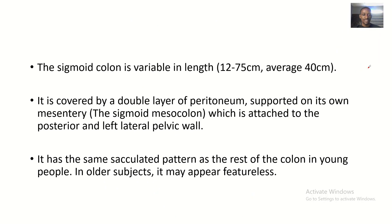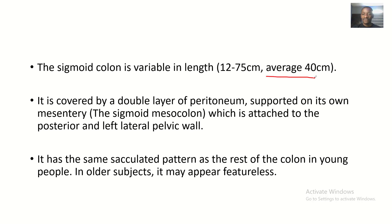Let's talk about the anatomy of the sigmoid colon. First, regarding length: it has a wide range, between 12 to 75 centimeters long. Its average length in about 50 percent of human beings is 40 centimeters.